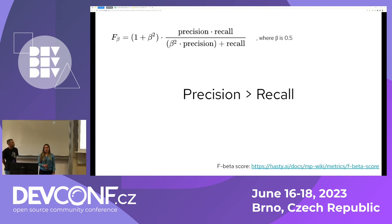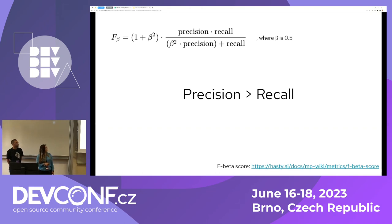We debated whether to include this slide because we try to avoid fancy long formulas — we wanted to keep it high level. But this formula is the expression of caring about precision more than recall. This is the F-score, and by choosing a 0.5 coefficient we specify that we care about precision twice as much as recall. This is our chosen metric for the project, and it's always better to have one single metric to guide your project.